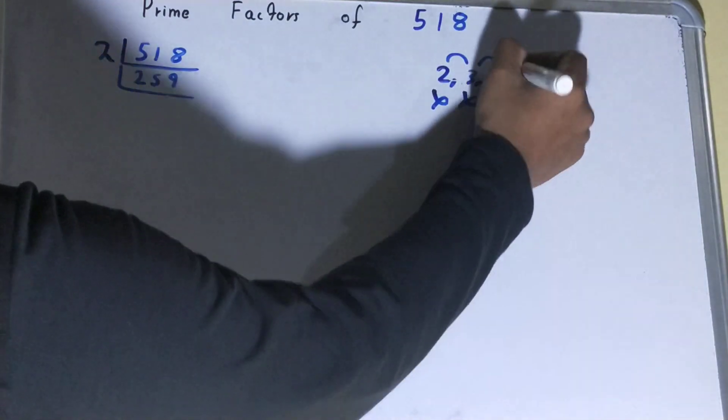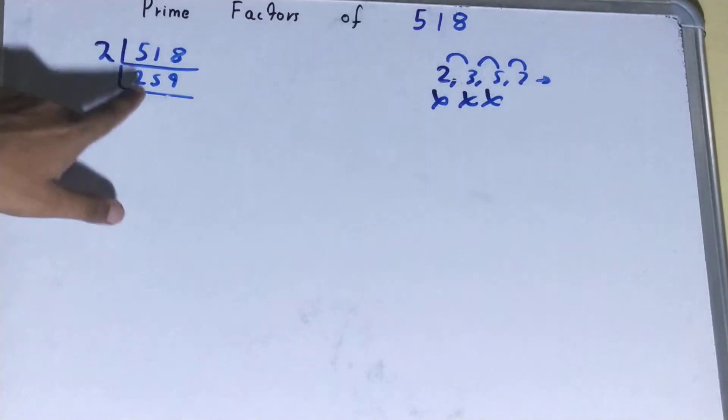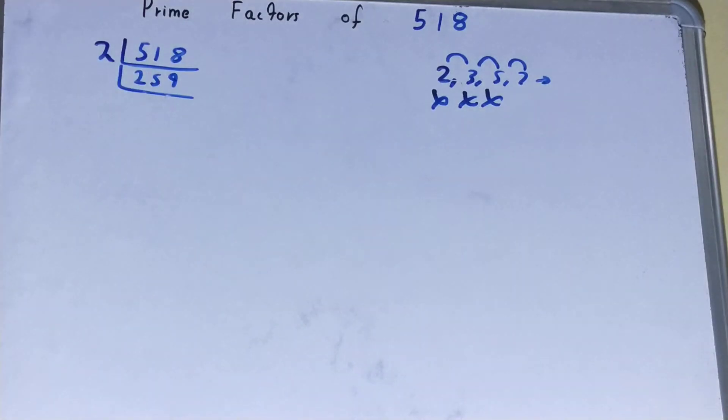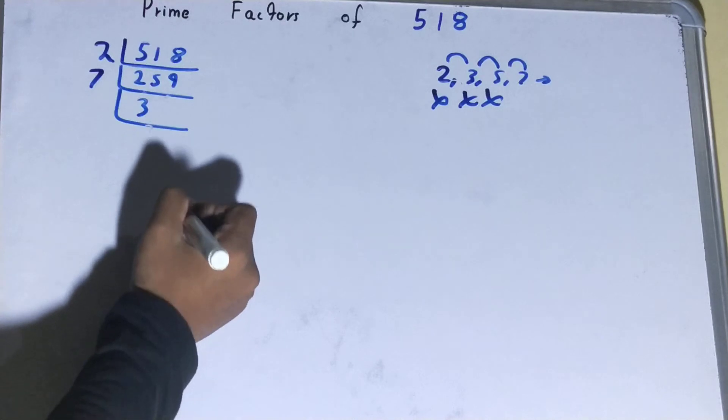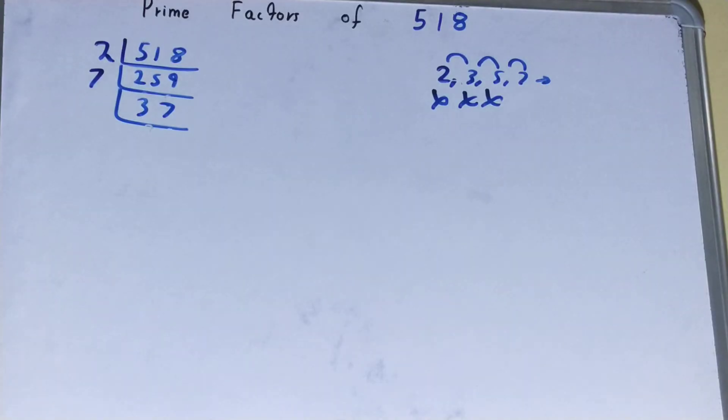7 times 3 is 21, 7 times 7 is 49. Yes, with 7 it is divisible, so it will be 37.